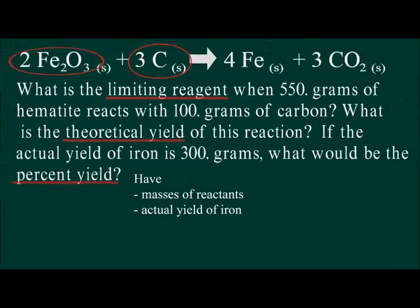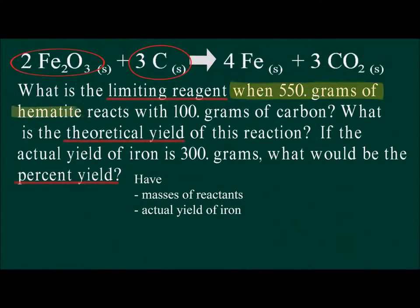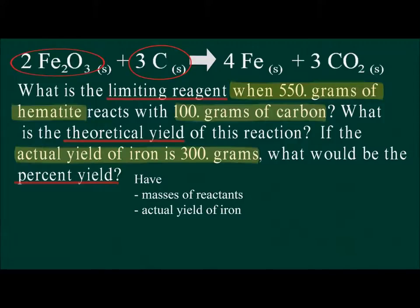We are given required pieces of information in the problem, such as the mass of hematite and the mass of carbon provided for the reaction, and the mass of iron actually produced from the reaction.